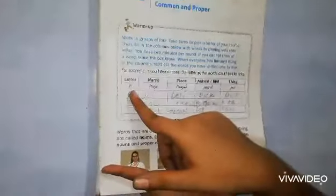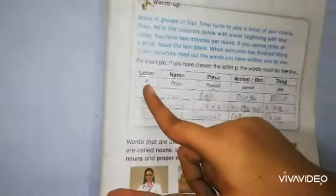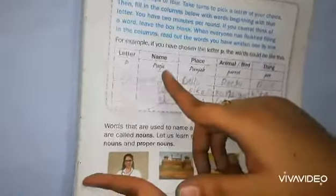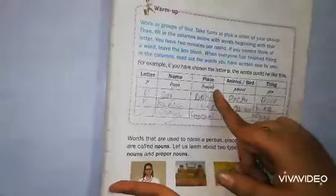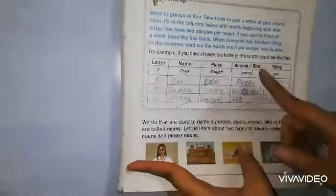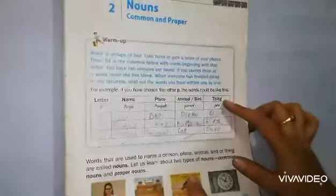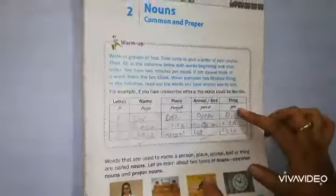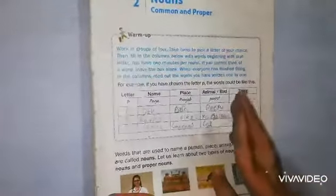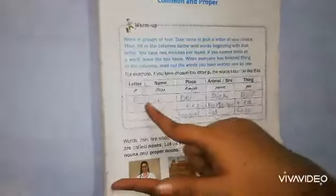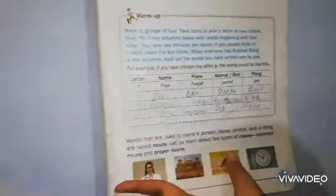What do you need to do first? You need to take a letter. You need to write a name from P. This is Pooja. Then place. This place is Punjab. Animal and bird, this is called Parrot. Then thing, thing is called Pen. So this is the P. You need to add a letter, then fill up.